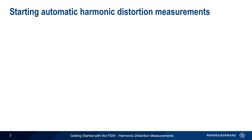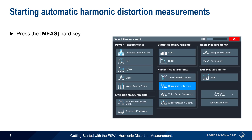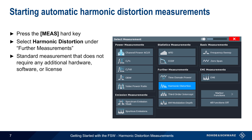To start the automatic harmonic distortion measurement, press the Measure hard key and then select Harmonic Distortion from the Further Measurements category. Note that harmonic distortion is a standard spectrum measurement and does not require any additional hardware, software, or license code.